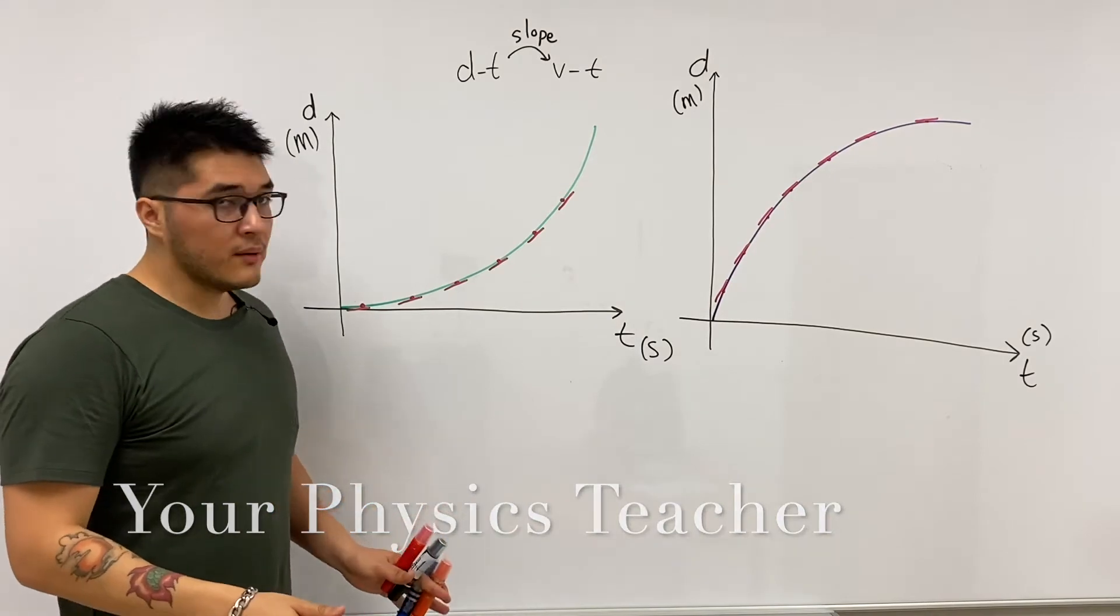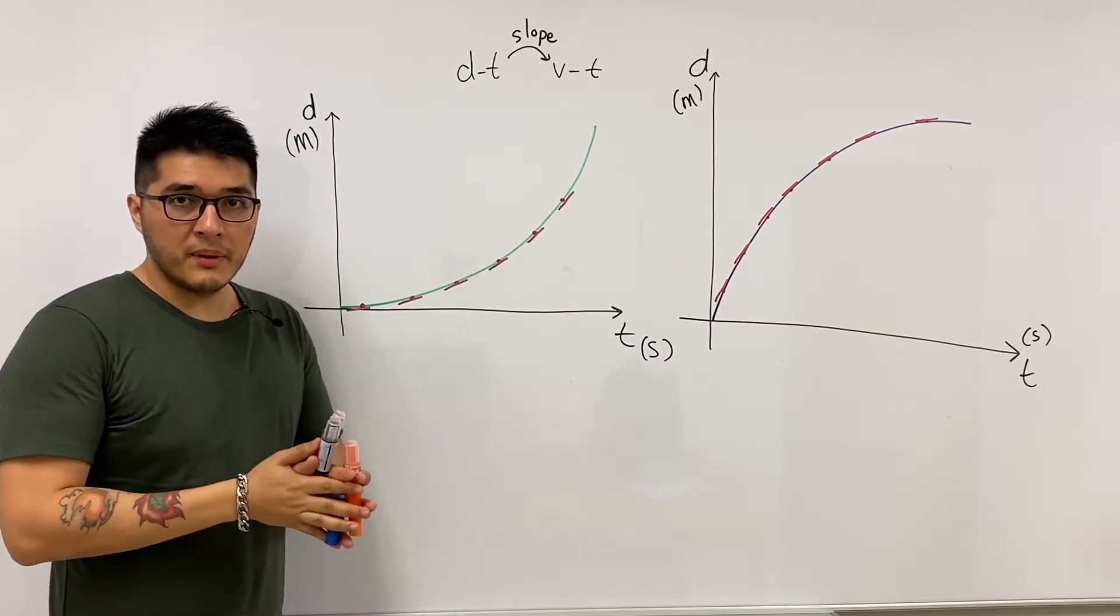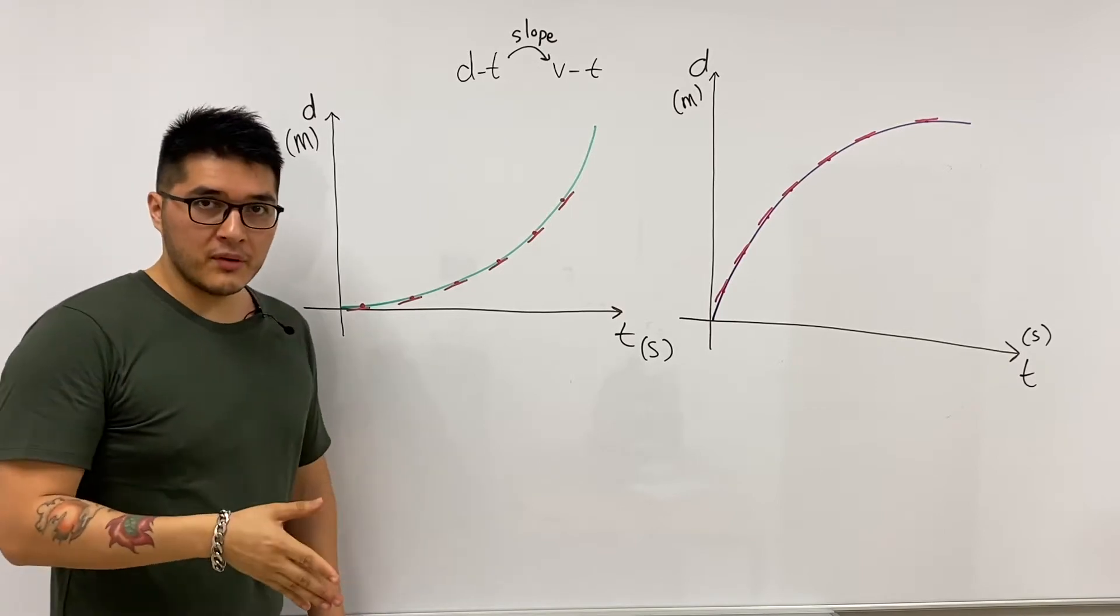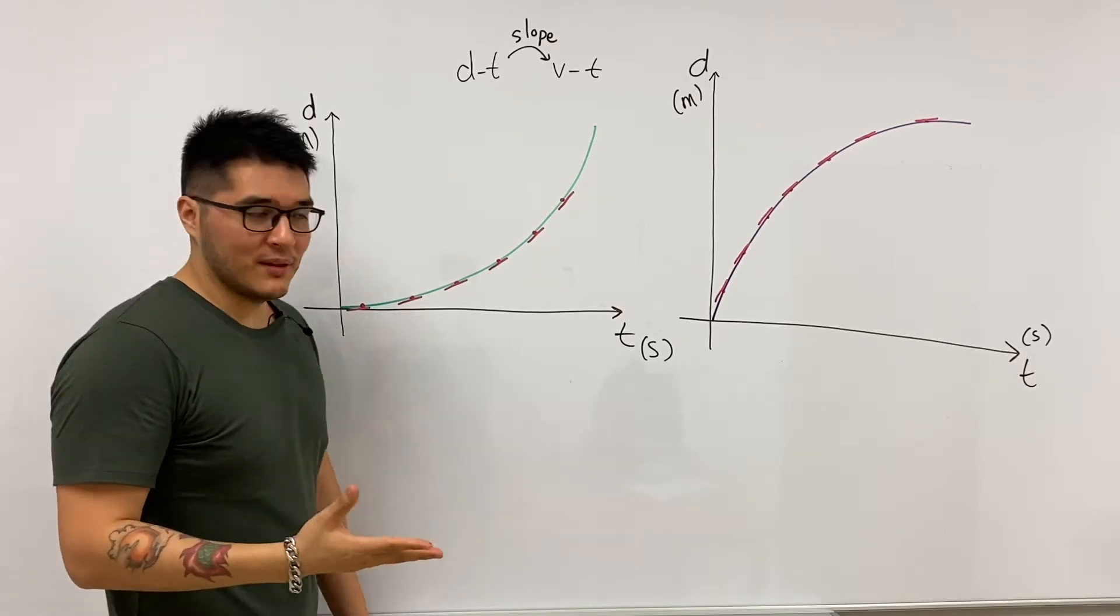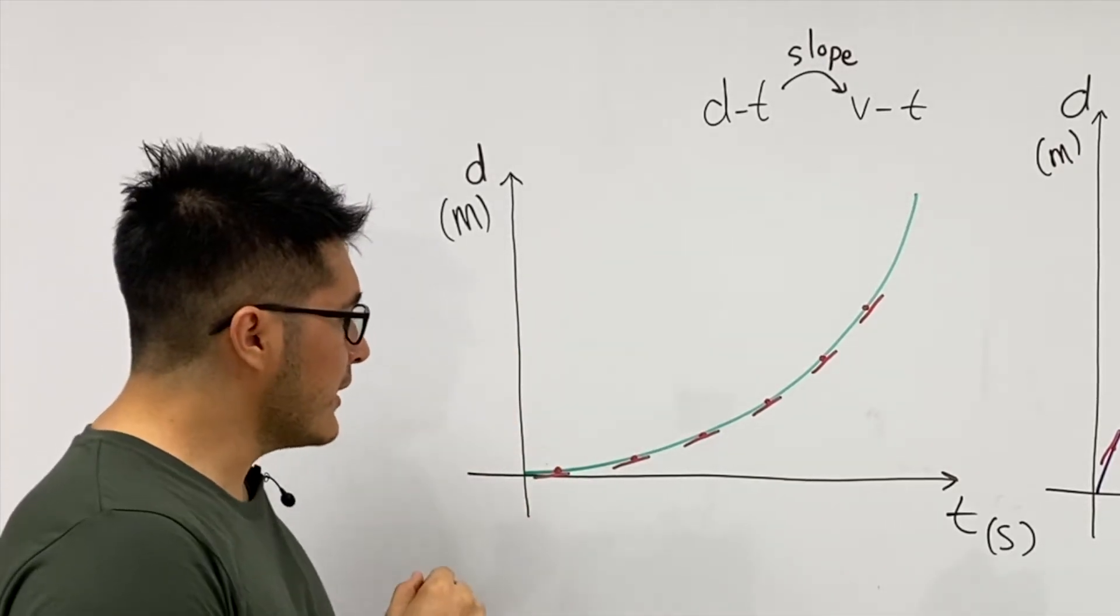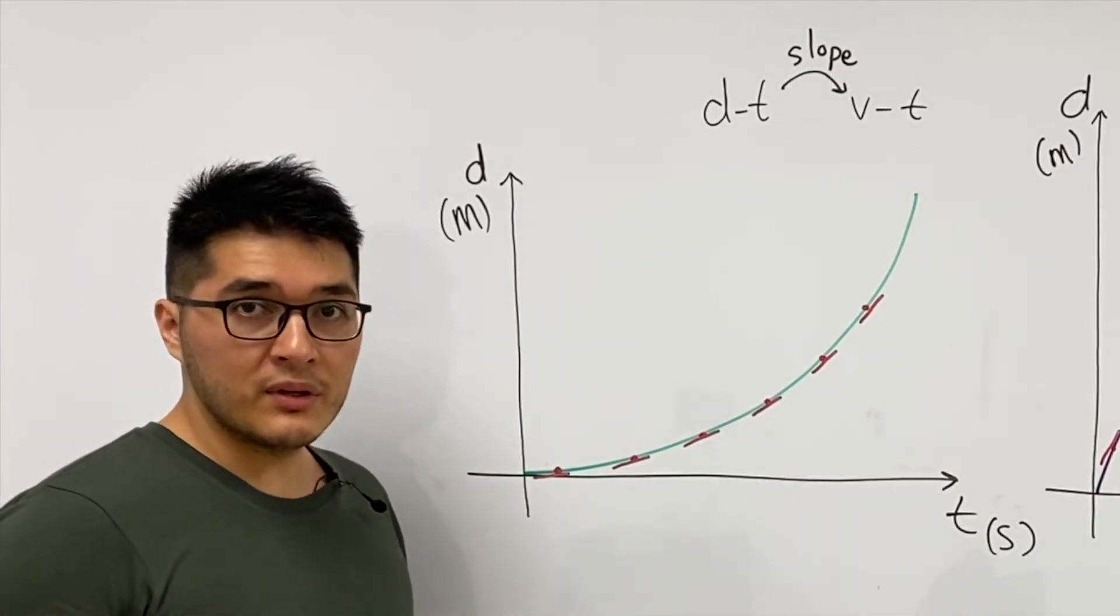All right, so now that we can tell the type of motion that we have based on the trend of the slope of the tangents, we can go a bit further and be more playful with it. Here we have two position versus time graphs, and we're going to be looking at how to represent motion in an alternative way.